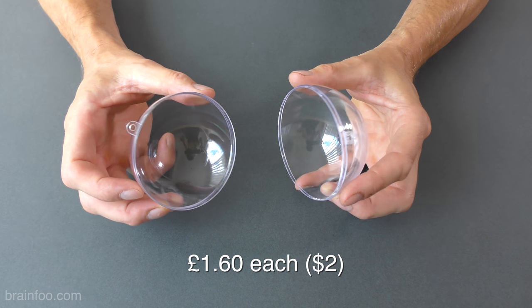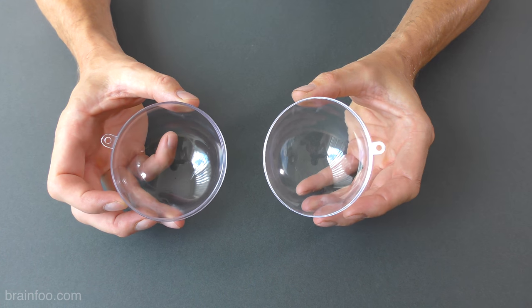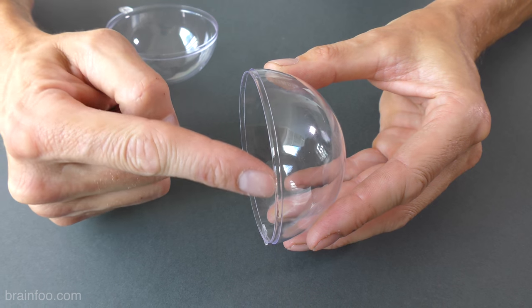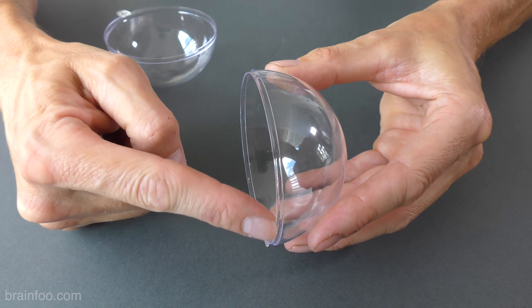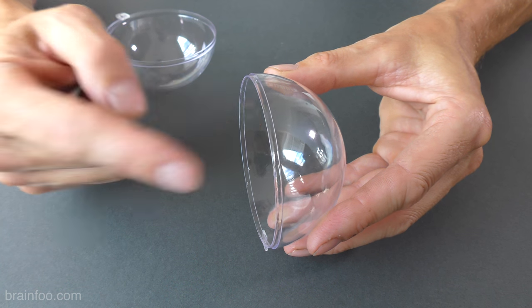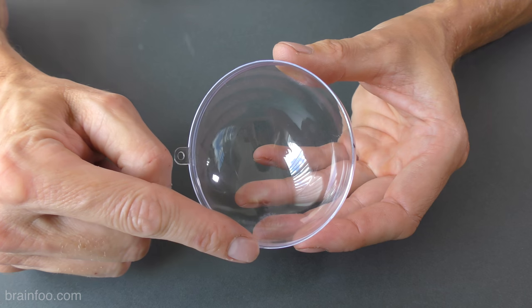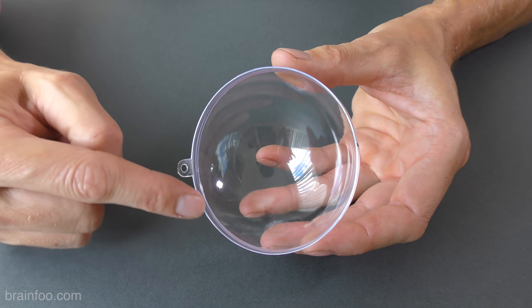And because they're designed to store stuff inside, they just pop open with a nice firm pull. If we take a closer look at the clipping mechanism, you'll notice that one side has an inner male clip like this, and the other half has a female recess that it clips into.